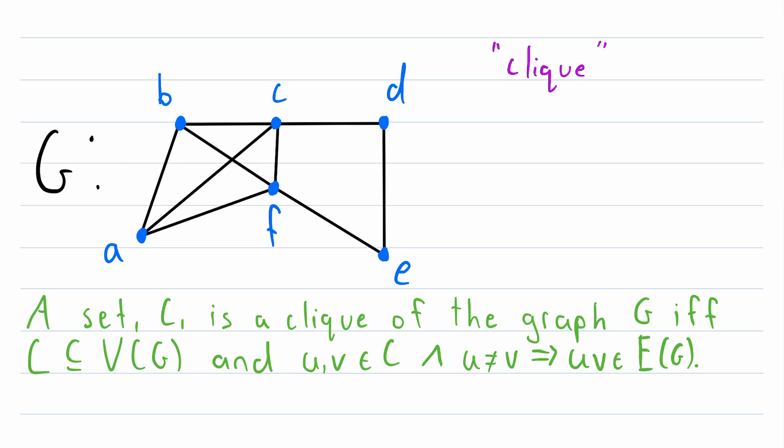So this is what a clique of a graph is: it's a subset of the vertex set, such that all distinct vertices in the clique are joined by an edge. If you're familiar with induced subgraphs, you can also think of cliques like this: a set of vertices is a clique if its induced subgraph is a complete graph.